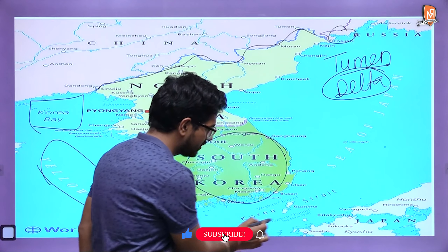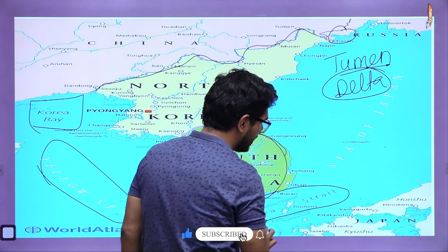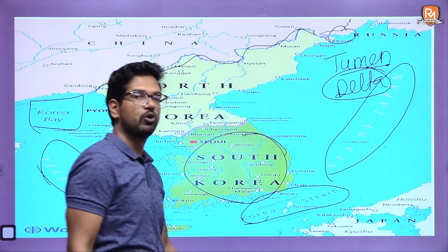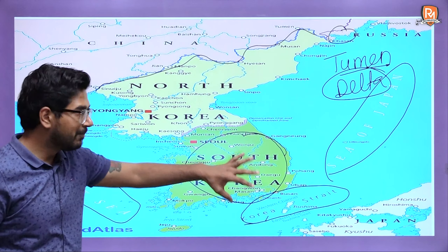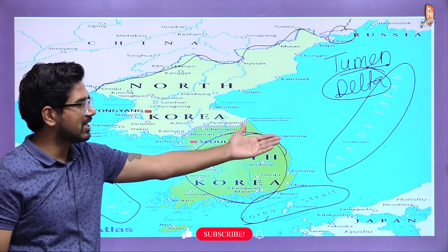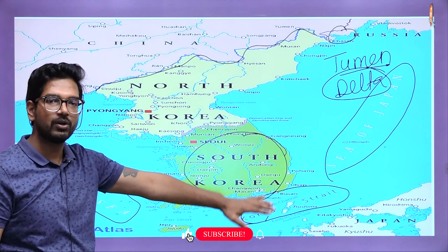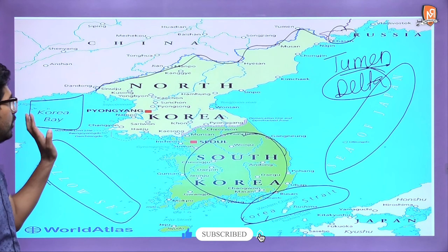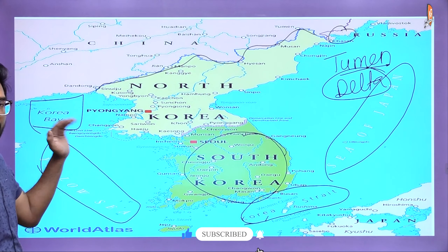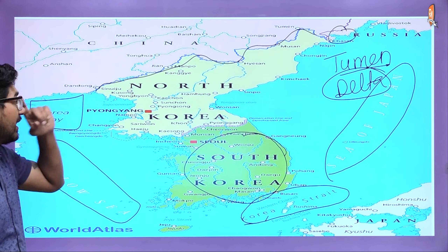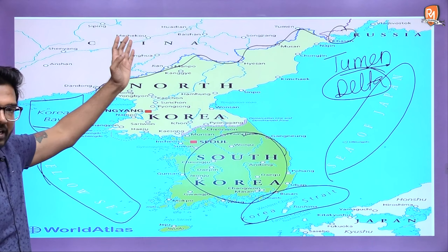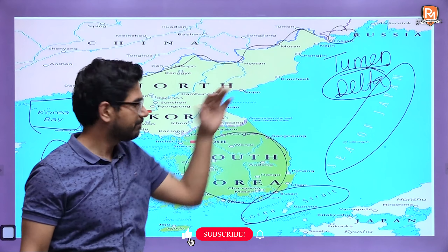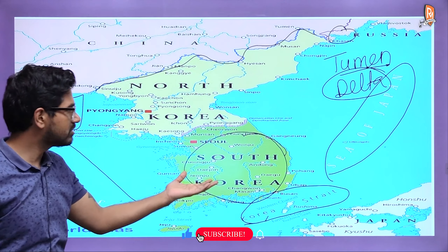Important water bodies: one is Korean Bay, another is the Yellow Sea, then we have the Korean Strait, and also the Sea of Japan. So the important water bodies are Sea of Japan, Korean Strait, Yellow Sea, and Korean Bay. Land borders are with China, Russia, and South Korea.